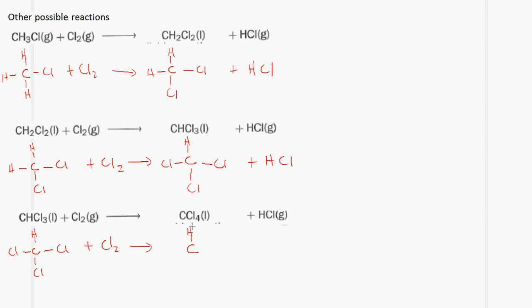If we replace all the hydrogen atoms in methane, we get the last compound, which is tetrachloromethane, or CCl4. The key thing to note here is that when you react an alkane with chlorine in the presence of UV light, you can get various products and the reaction type is a substitution reaction.